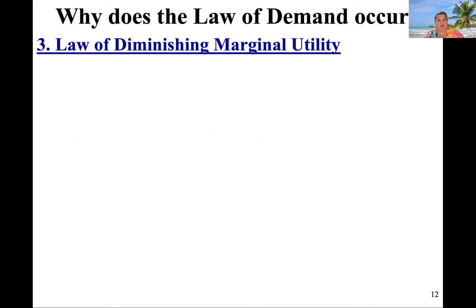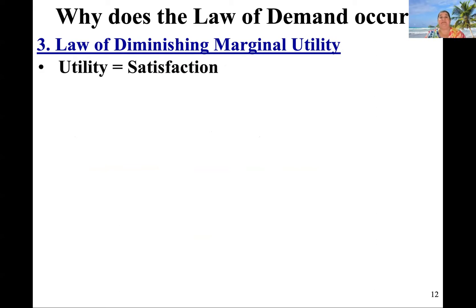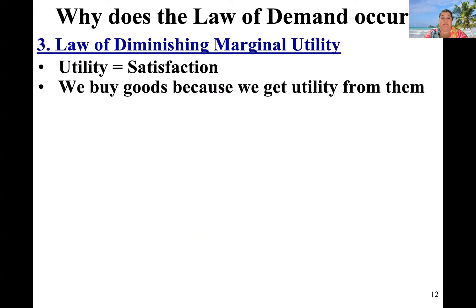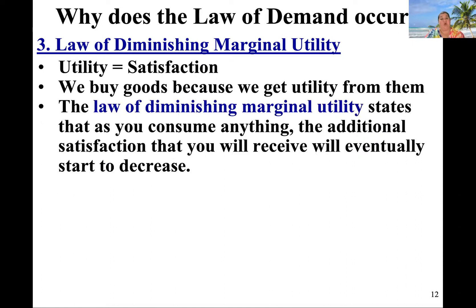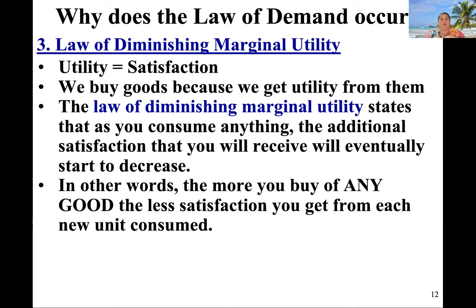Next, the law of diminishing marginal utility. Let's talk about these words. Diminishing obviously means getting smaller. Marginal means a little bit extra — add a note that it means additional or extra. And utility means satisfaction. So what does the law of diminishing marginal utility mean? We get some satisfaction out of the goods that we buy. But the law says as you consume more of something, the additional satisfaction decreases and decreases. The more of anything you buy, the less satisfaction you get when you tack on another one.